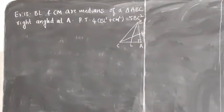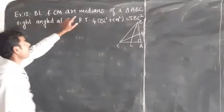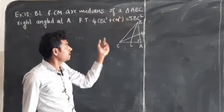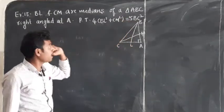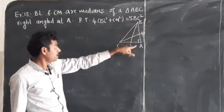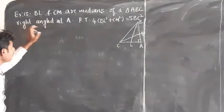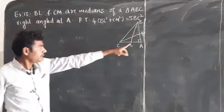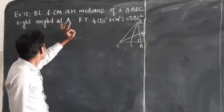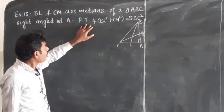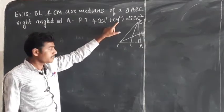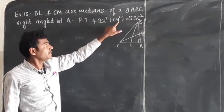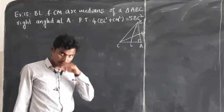Now example 13. BL and CM are the medians of triangle ABC, right angle at A. Prove that 4(BL square plus CM square) is equal to 5BC square.